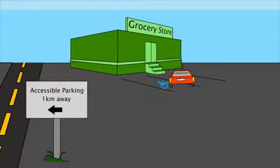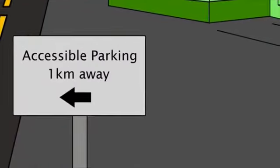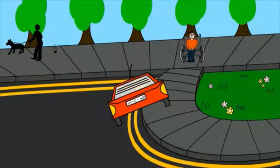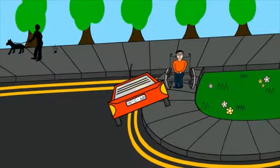When he gets to the store, someone has parked their car over the line, so he must drive to a different parking lot which is almost one kilometre away. Now Tom must make his way to the store on footpaths, but there is often dog foul on the footpath so he must cross the road to avoid it. The next obstacle he faces is a car parked on the footpath, blocking half of it and preventing Tom from continuing his journey to the grocery store.